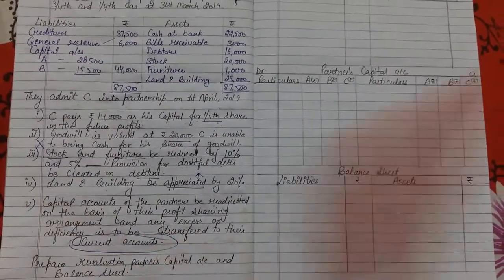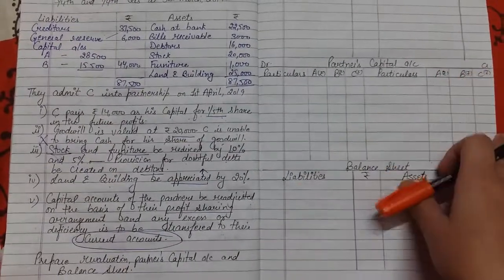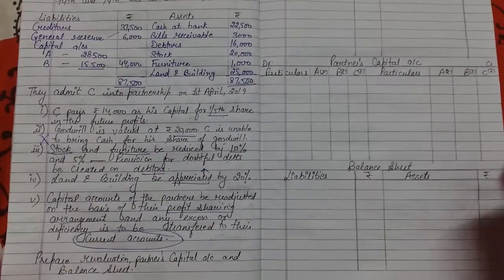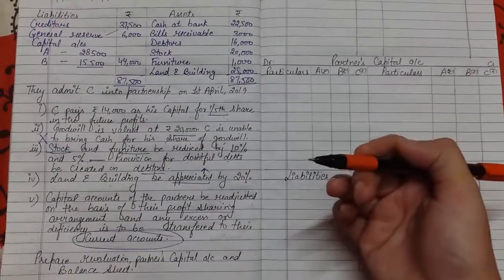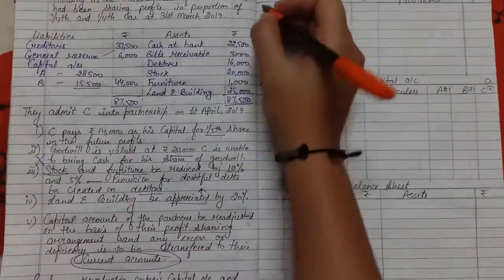In the previous example I did, we adjusted using cash. In this question it's given to do it in current account. So whatever difference comes in partners' capital account, we will transfer it to current account. First we'll make the revaluation account.